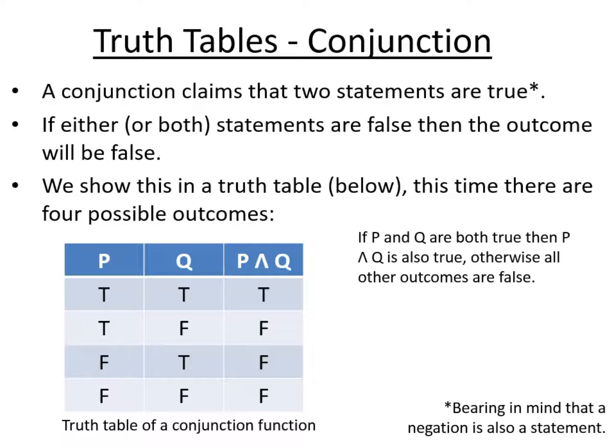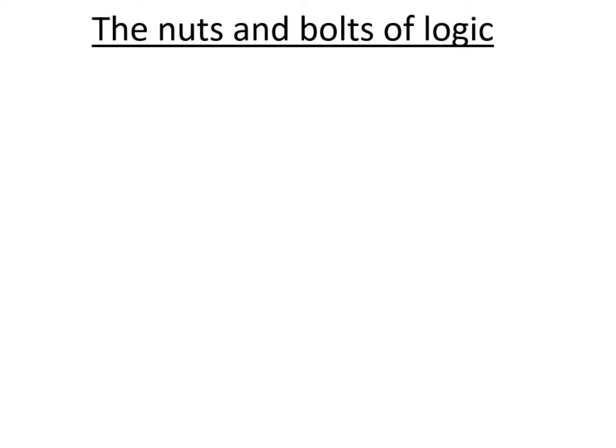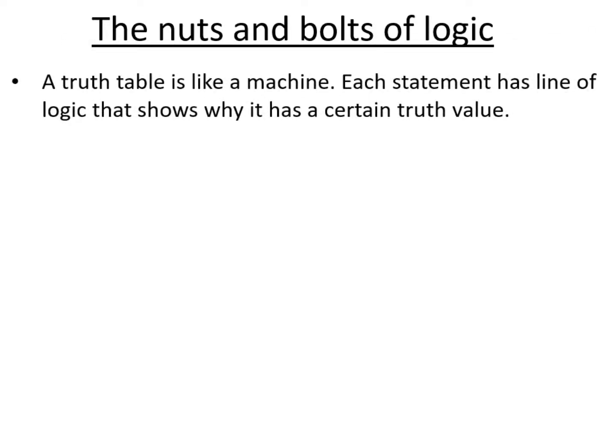These basic truth tables are what you need to memorize in order to follow through the lines of logic in more complicated arguments. A truth table really is like a machine — each statement has a certain line of logic based on the inputs, the truth values of your input statements like P and Q, and it will pop out a certain truth value at the other end. It follows the same logic on every line, giving you a reliable output.